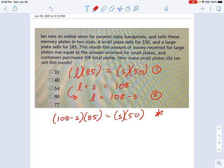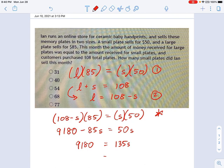So this is going to require a calculator, because I need to know what 108 times 85 is. So 108 times 85. This is going to be 9,180 minus 85S equals 50S. Keep on working with that. That's 9,180 equals 135S. See, I added 85S to each side. And now we divide each side by 135.